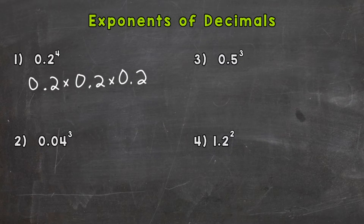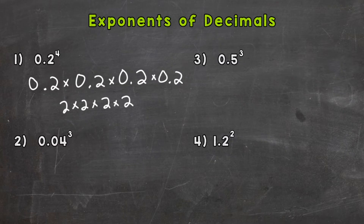Now we are ready to multiply in order to solve. I like to think of it like this: two times two times two times two — I took the decimal out in order to solve, and we'll put it back in at the end. So two times two is four, times two is eight, times two is sixteen.